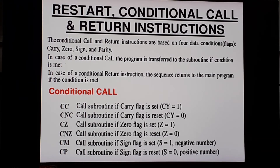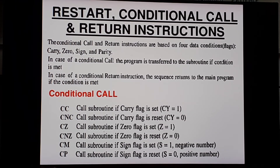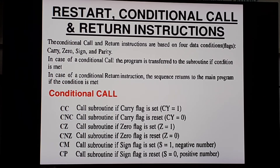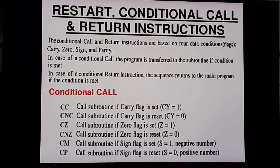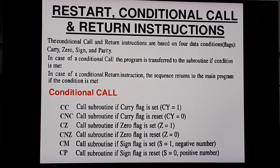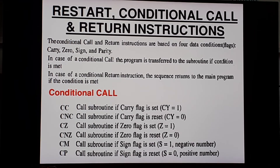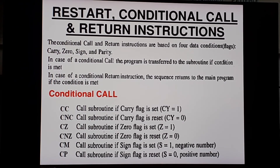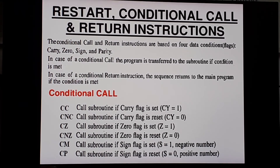The third instruction is CALL — C-A-L-L address. We again have two types: unconditional and conditional. We will see conditional first, similar to what we did with conditional jump. The addressing mode is immediate addressing mode and bytes are 3 bytes. The comment: the call instruction is used to call a subroutine. For unconditional call it is used to call a subroutine unconditionally.